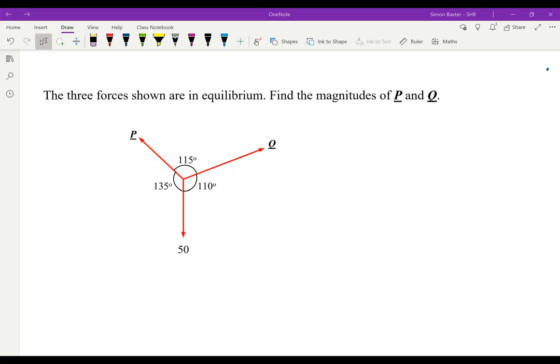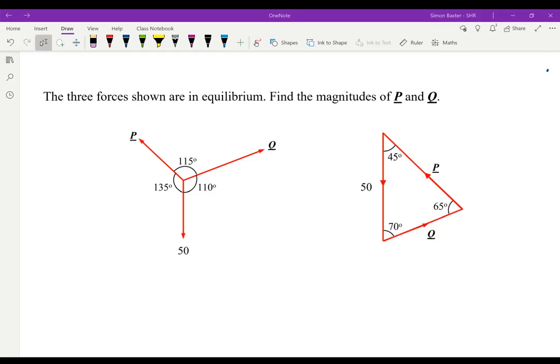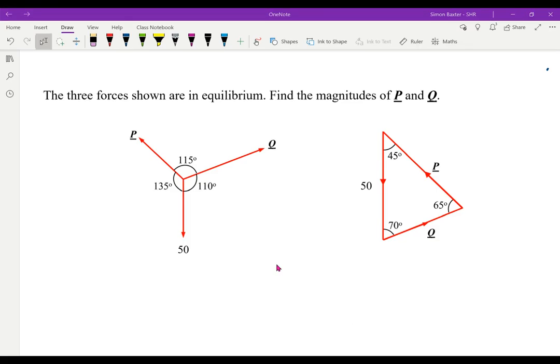I can draw a triangle of the three forces added together. I know that we will have a triangle because they're in equilibrium. Well, here is the triangle. When you're drawing this, you need to draw one force first. I would always draw perhaps the 50 first, vertical. Then Q goes off at 110 here. That means if I just look above that and take a vertical line there, this part will be 70 and this part will be 45.